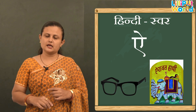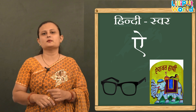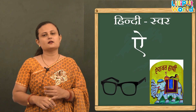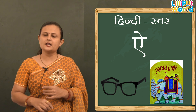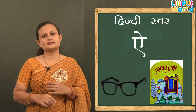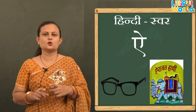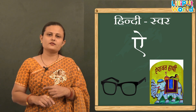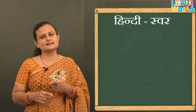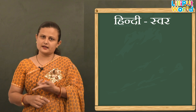Now ऐ — Ai se Ainak. Ainak means — aapke dada dadi jo chashma pahante hain na, use kya bolte hain? Ainak! Aur doosra — Ai se Airavat. Airavat means jo elephant ke jaisa hota hai use Airavat bolte hain.